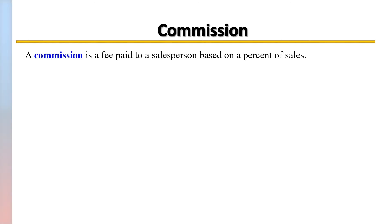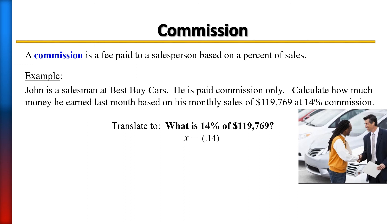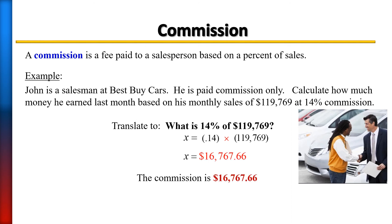A commission is a fee paid to a salesperson based on a percent of sales. John is a salesman at Best Buy Cars and is paid commission only. Calculate how much he earned last month based on monthly sales of $119,769 at a 14% commission rate. Turn 14% into 0.14 and multiply by the sales amount. John earned $16,767.66 in commission.